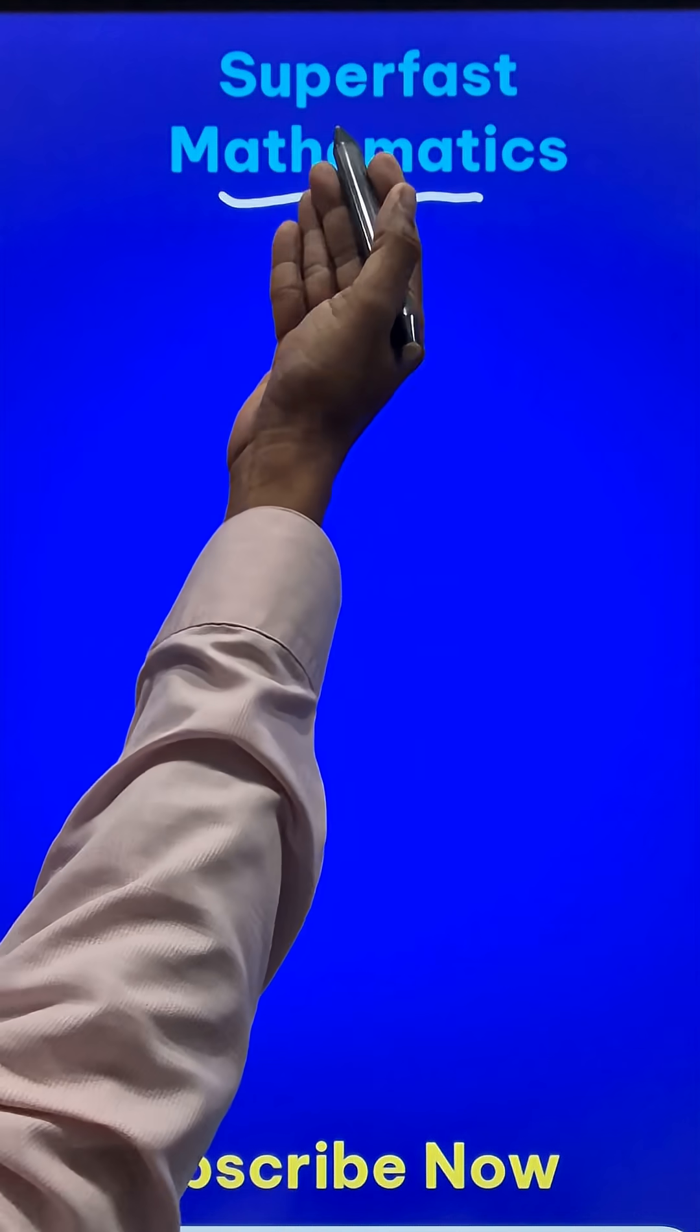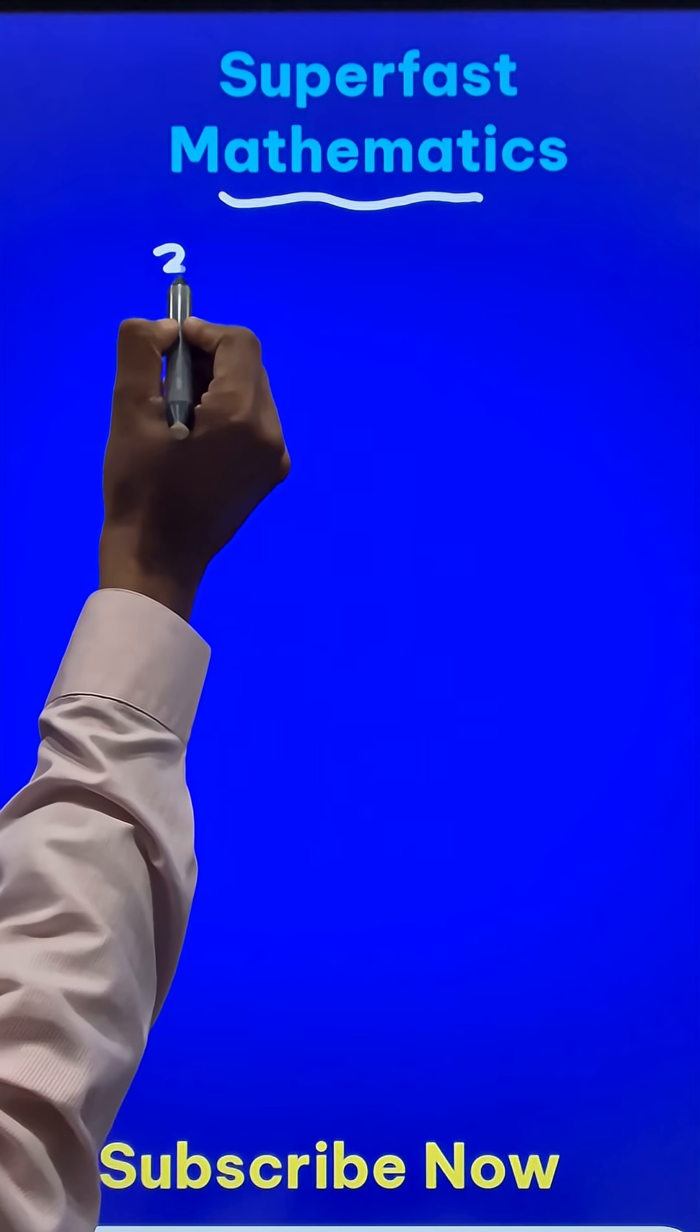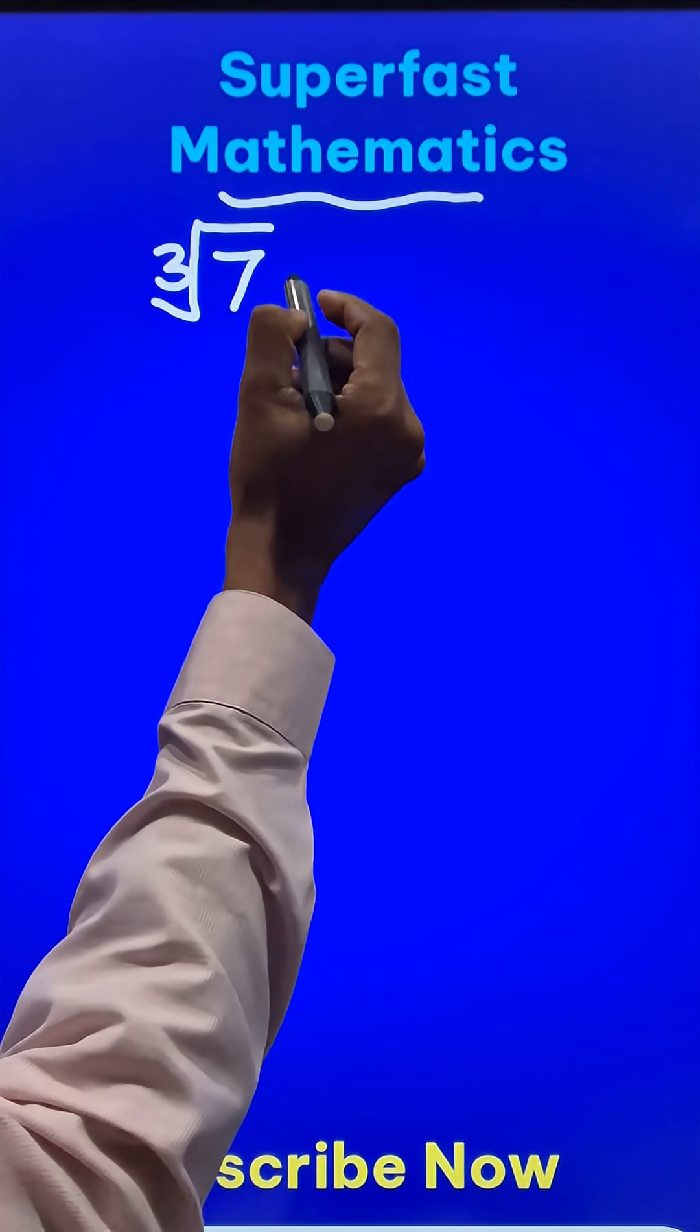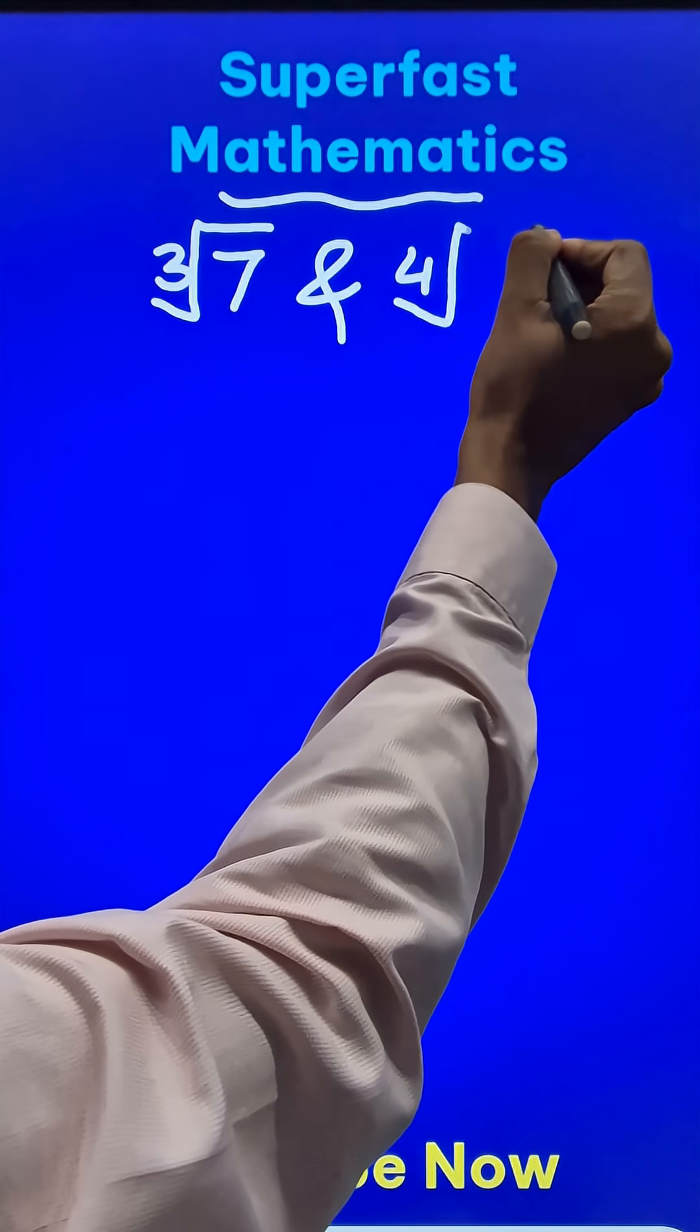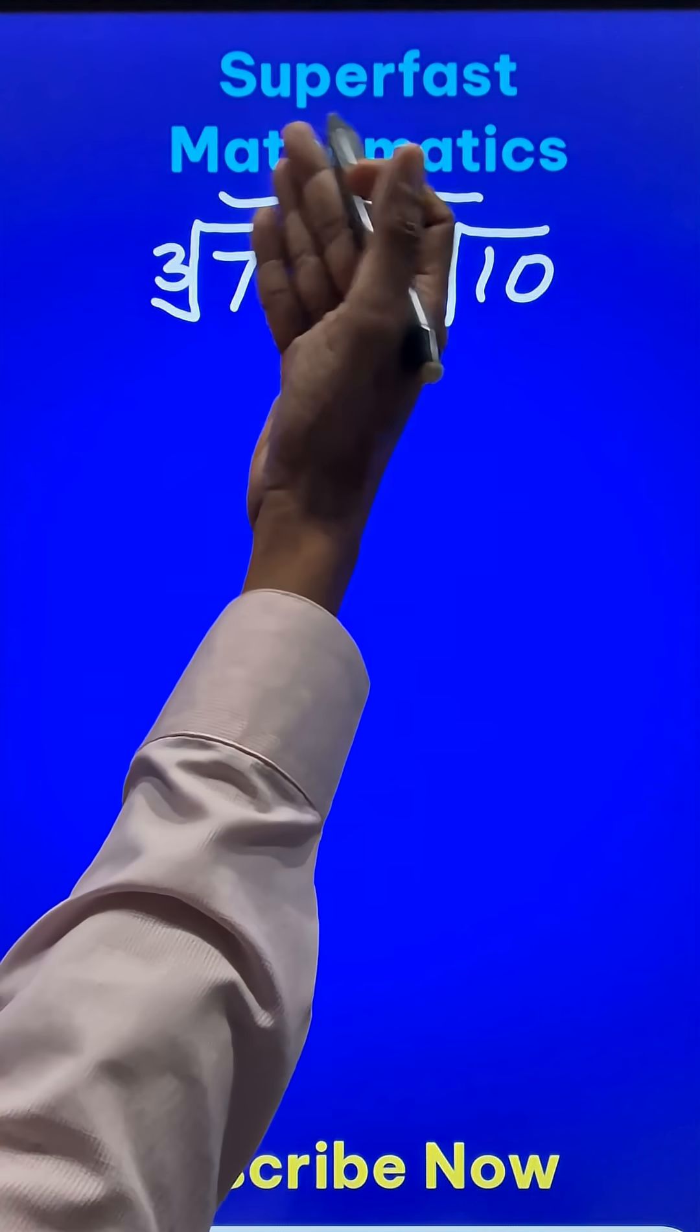Comparing surds can be done using some super fast methods, just like comparing cube root of 7 and fourth root of 10. How do you know which one of them is greater?